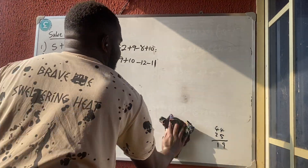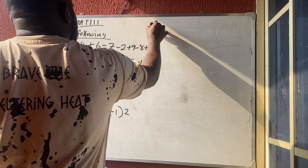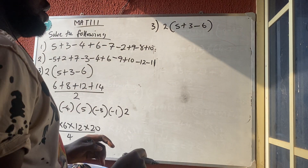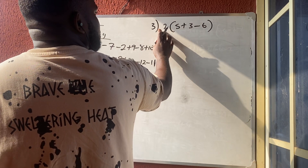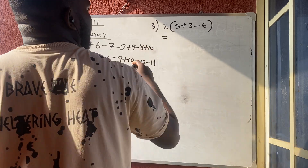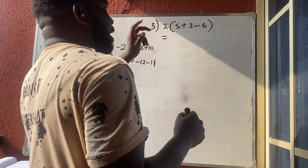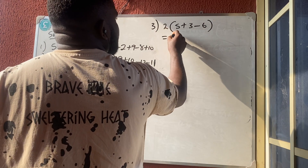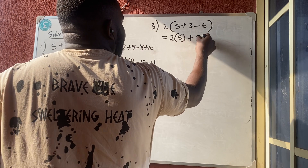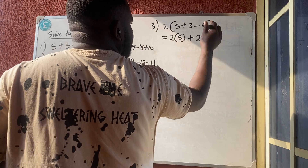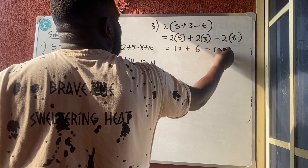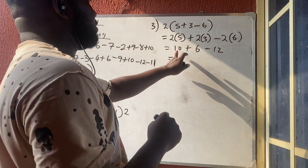Number 3: two brackets, quantity five plus three minus six. There are two ways. You can add everything inside first, then multiply by two. Or, if you have alphabets that can't be added, you expand: two times five plus two times three minus two times six, giving ten plus six minus twelve.